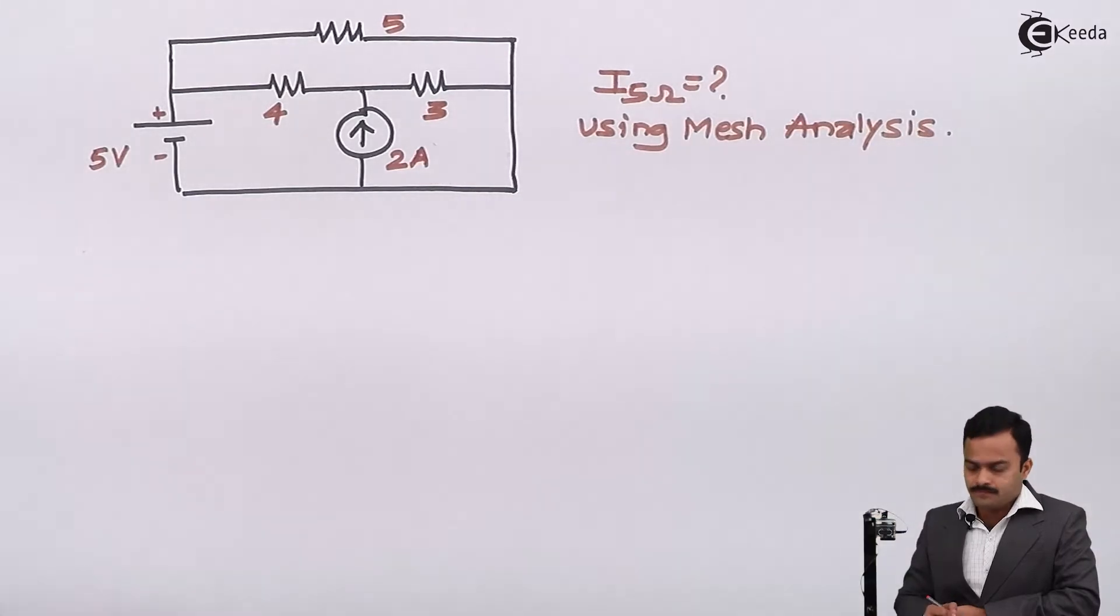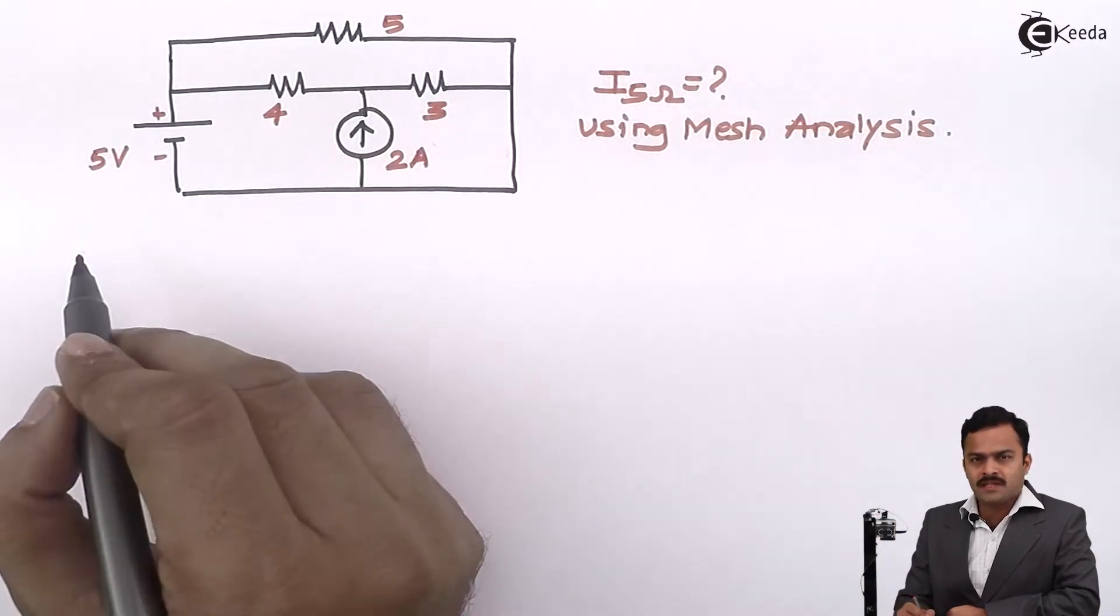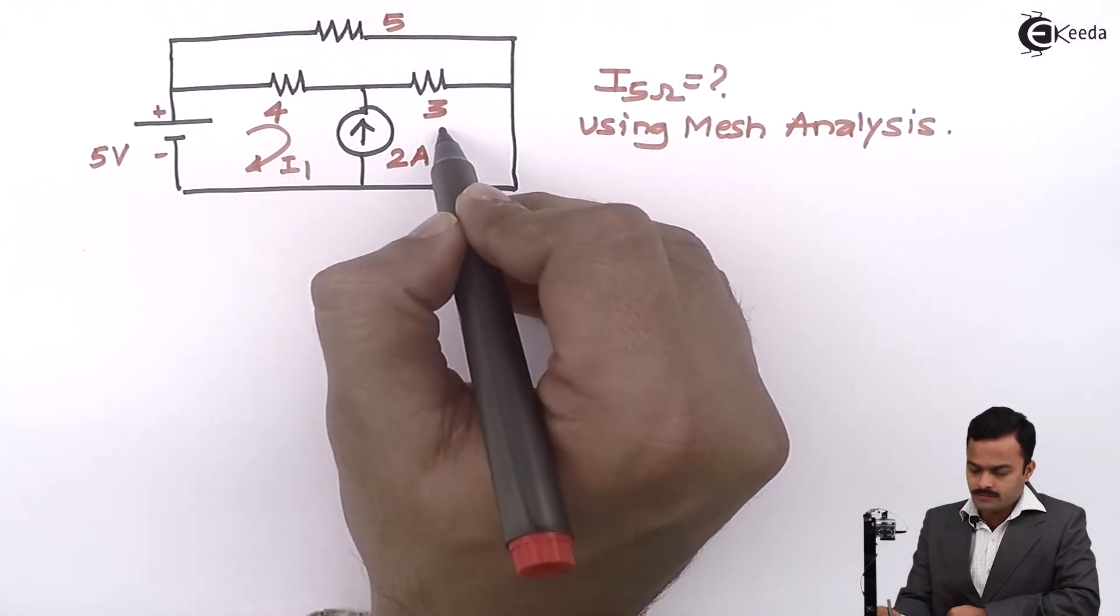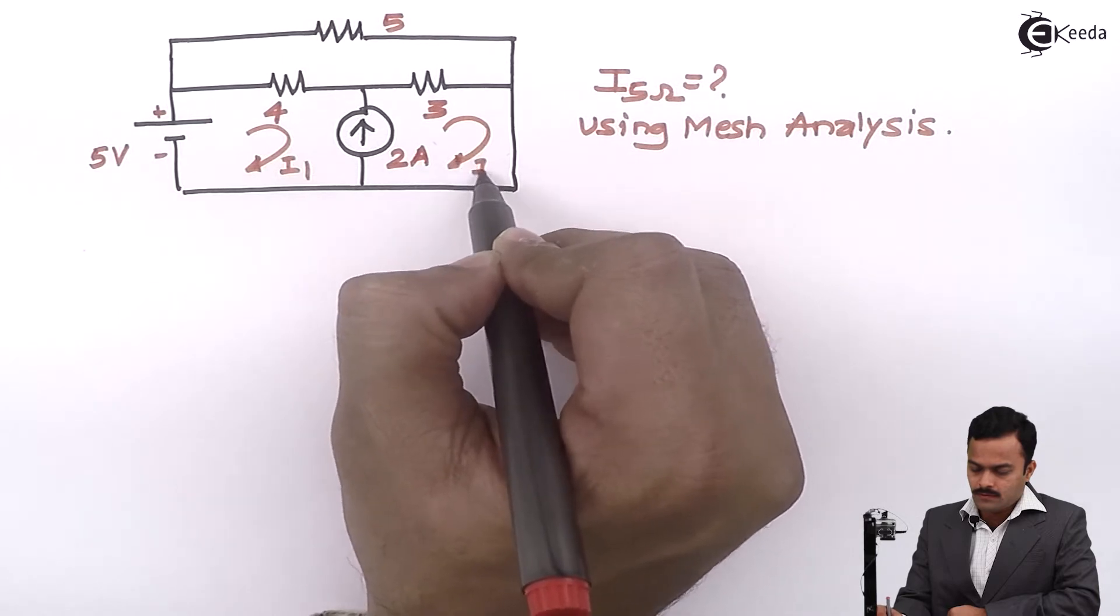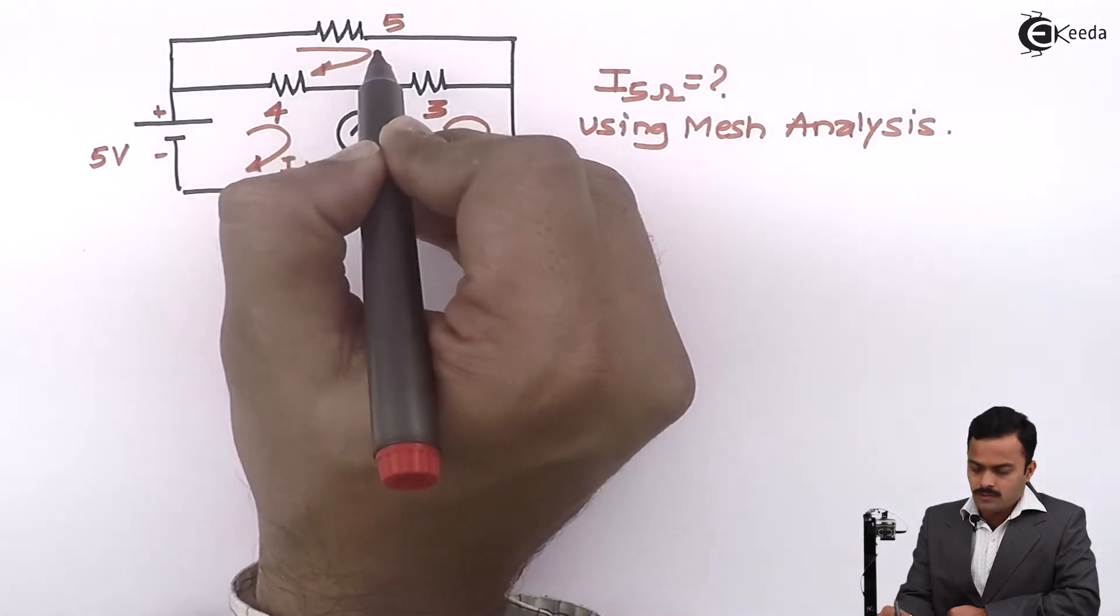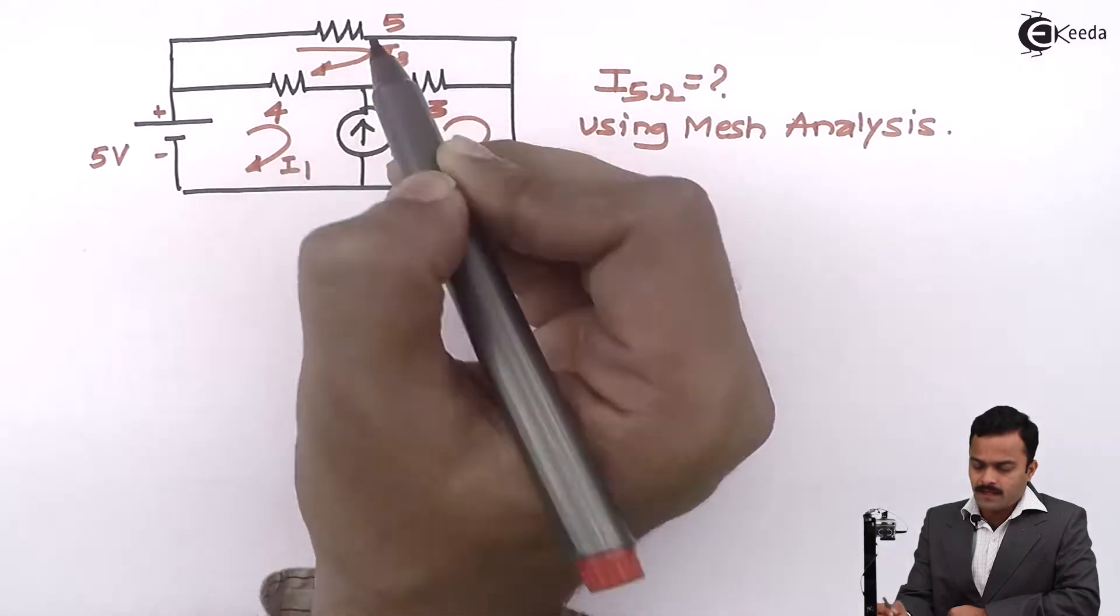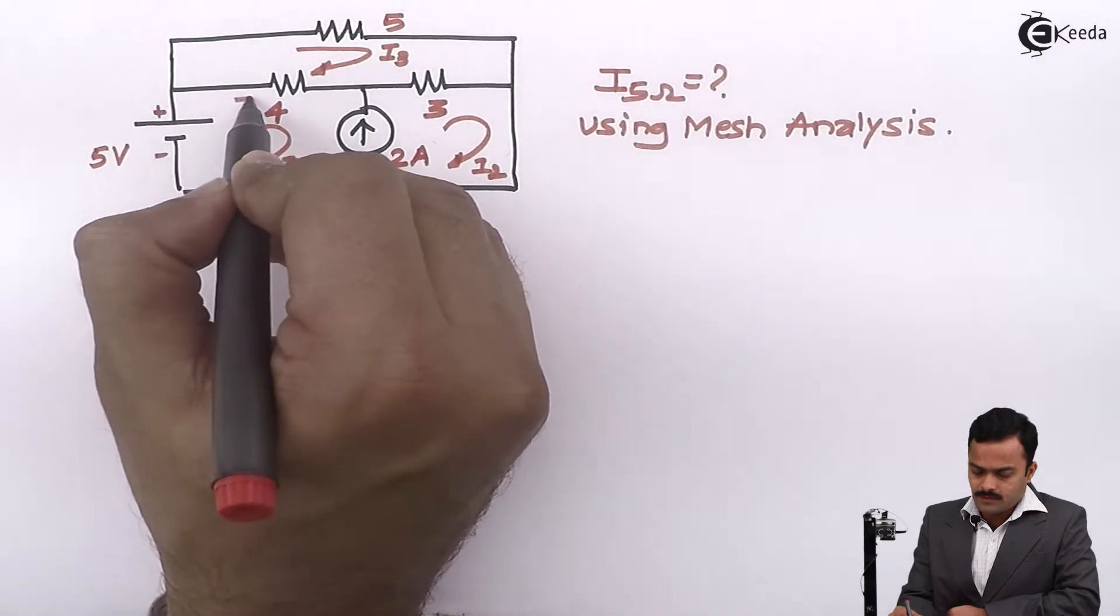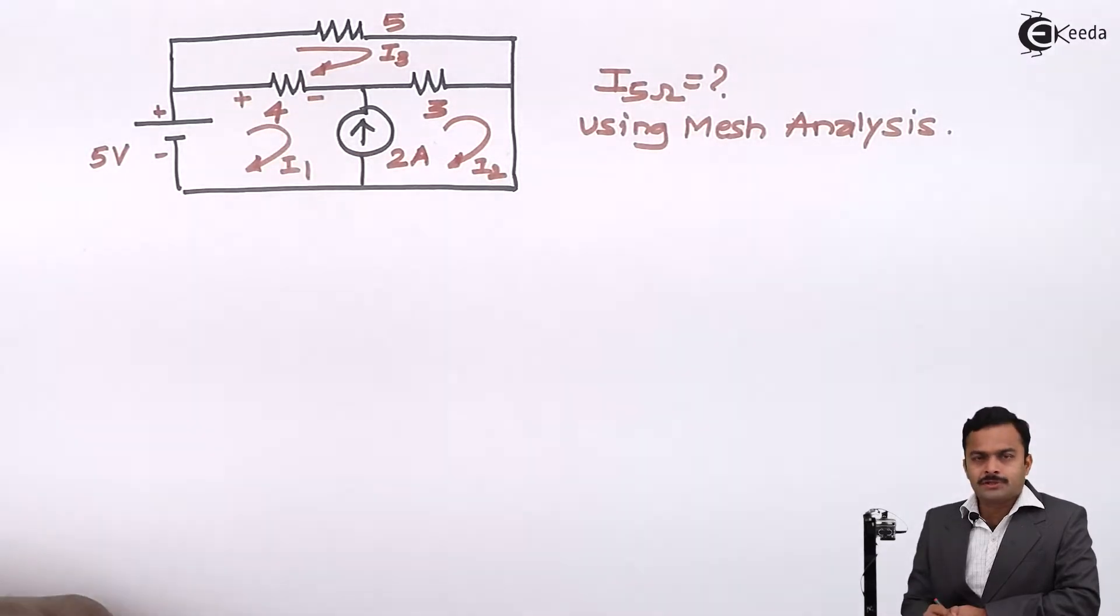So let's start. 1, 2, 3 loops are there. I1 is loop current 1, loop current 2 is I2, and loop current 3 is I3. Based on the direction of currents, let's mark polarities of voltage drops.